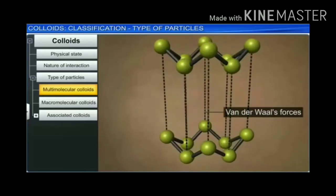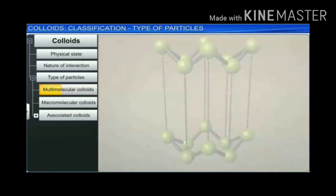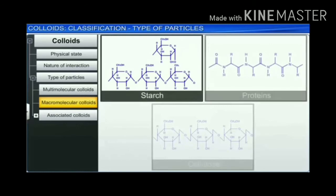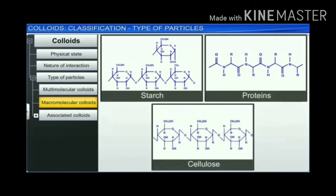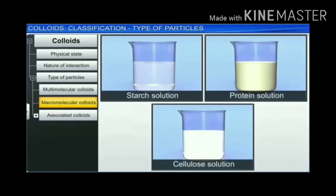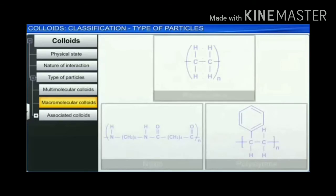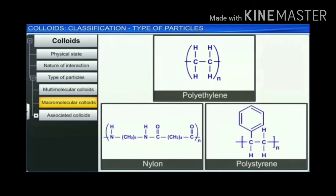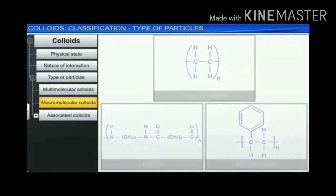The other category of colloids is macromolecular colloids. Certain substances like starch, proteins, and cellulose have molecules of big size which lie in the colloidal range. Solutions of these substances in suitable solvents are called macromolecular colloids. Synthetic macromolecules such as polyethylene, nylon, and polystyrene also form colloids when dispersed in suitable solvents. Macromolecular colloids are stable and resemble true solutions in some respects.